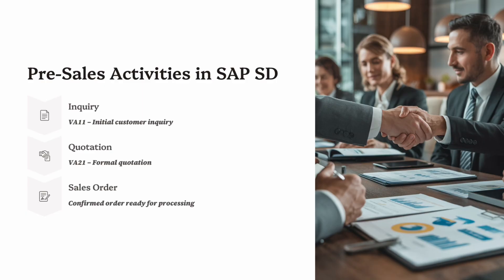Second, Quotation (VA21): the company's official offer to the customer. It includes pricing, discounts, delivery terms, and validity dates. When the customer accepts the quotation, it forms the base for a sales order. For example, a customer asks: 'Can I get 500 units of product X next month?' You create an inquiry in SAP, then send a quotation with price and delivery terms. If accepted, you convert it into a sales order (VA01). Pre-sales documents help track leads and opportunities, ensuring every sale starts with the right data and agreement.